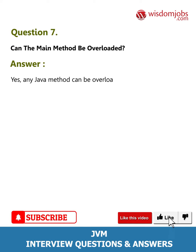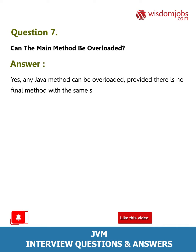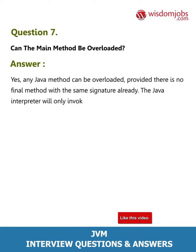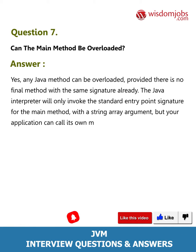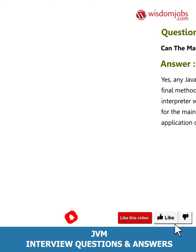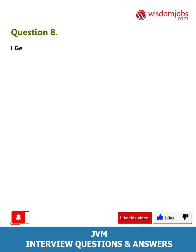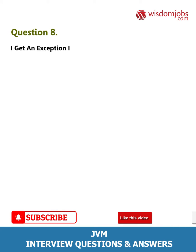Question 7: Can the main method be overloaded? Answer: Yes. Any Java method can be overloaded, provided there is no final method with the same signature already. The Java interpreter will only invoke the standard entry point signature for the main method with a string array argument, but your application can call its own main method as required.